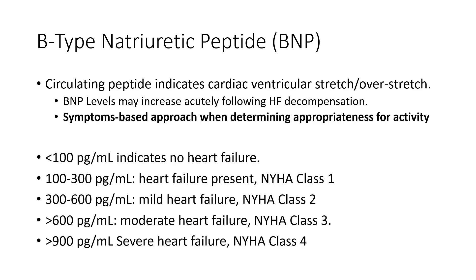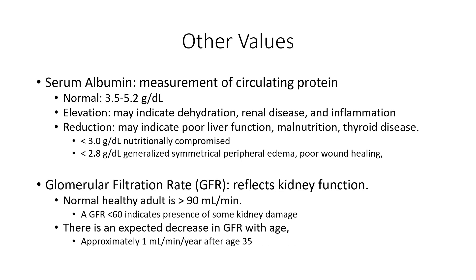Serum albumin is a measurement of circulating protein. Higher levels may indicate an inability to clear protein from the blood — possibly renal disease, inflammation with muscle breakdown, or dehydration. If there's too little, it may reflect poor liver function, malnutrition, or thyroid disease. Different cutoffs exist depending on whether the concern is nutritional or some other issue.